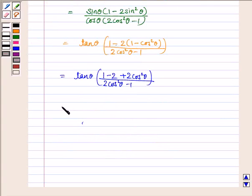So this is equal to tan θ into 1 minus 2. Minus 2 into minus cos square θ is plus 2 cos square θ upon 2 cos square θ minus 1.